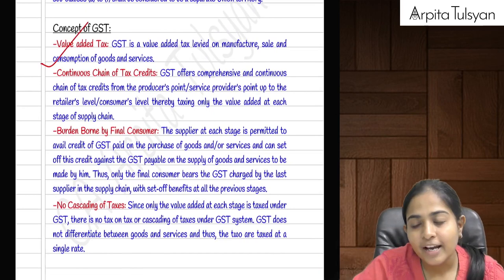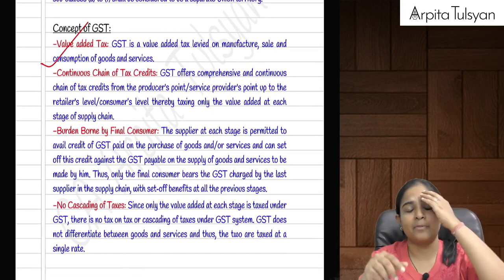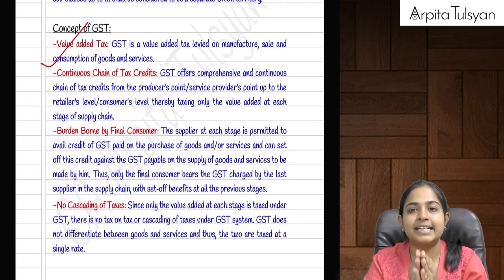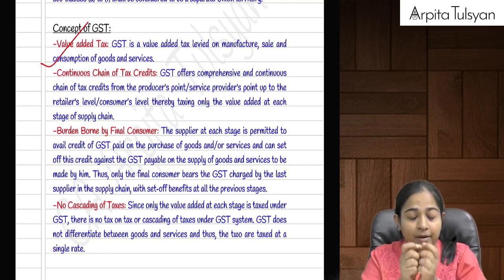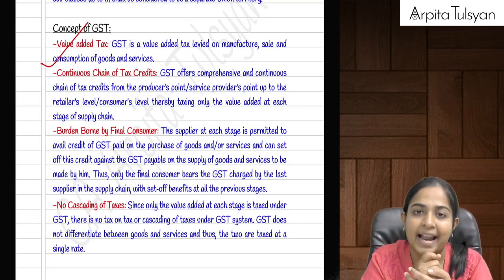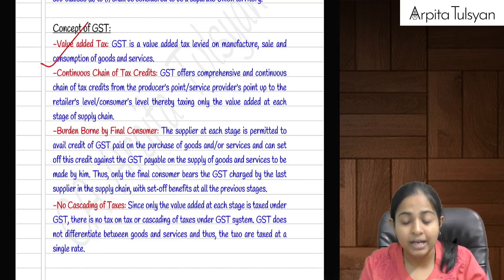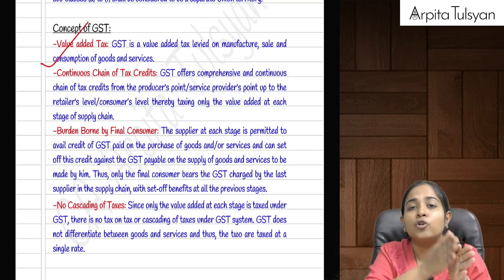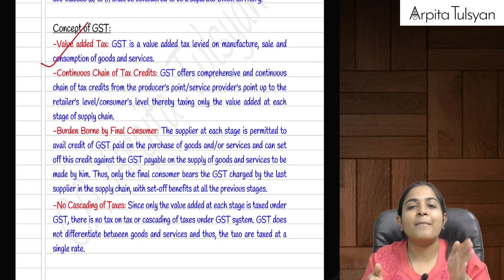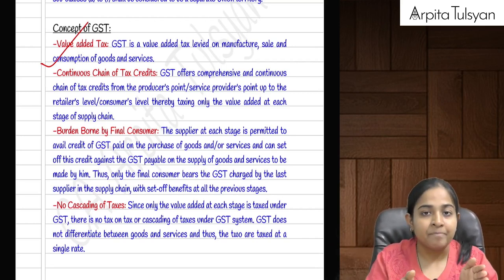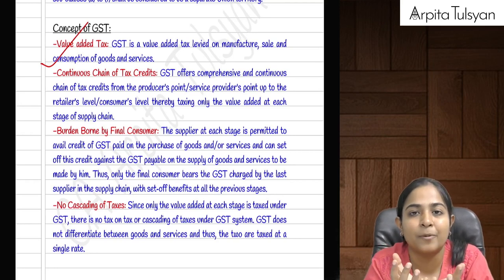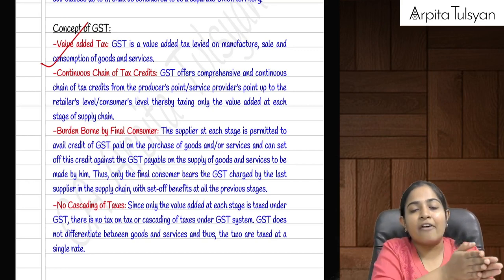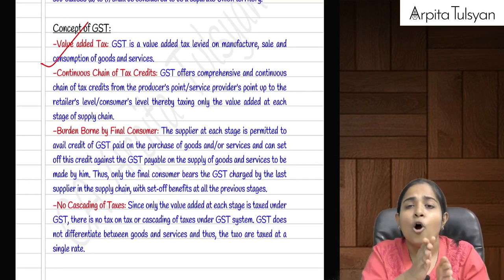Moving on to the concept of GST: the basic idea is that GST law is made with the purpose of making taxes applicable only on the value addition. Let's talk about the entire chain from manufacturer to wholesaler to retailer to consumer. When the manufacturer is manufacturing and selling something, there will be a particular tax on sale payable to the government.